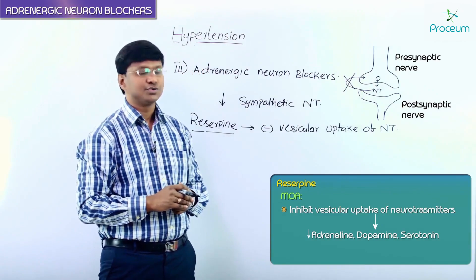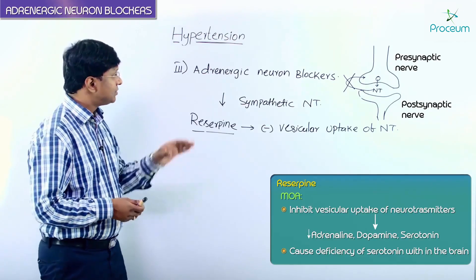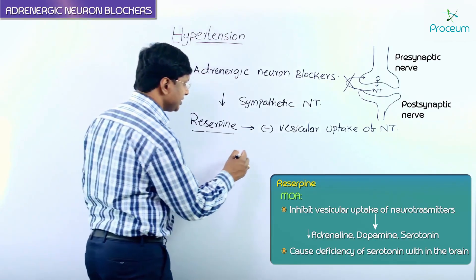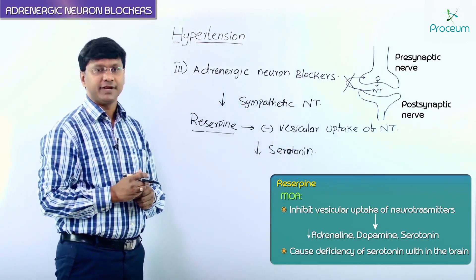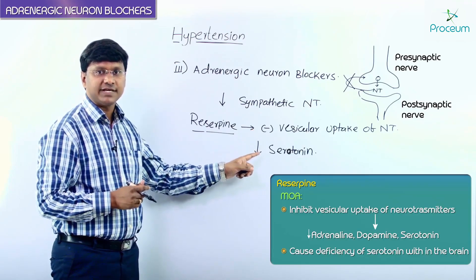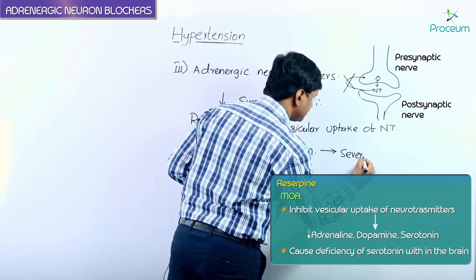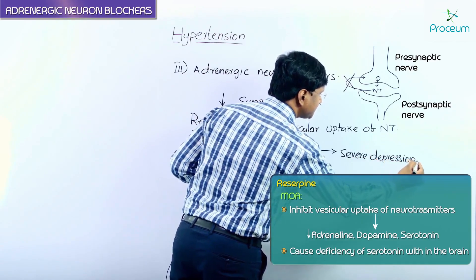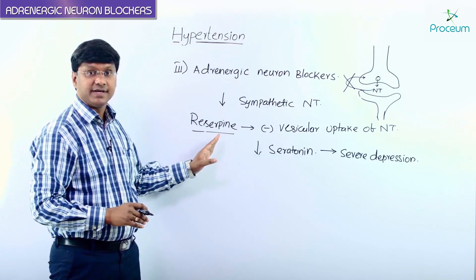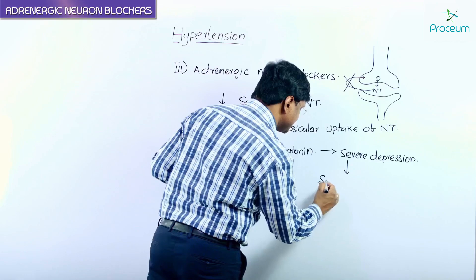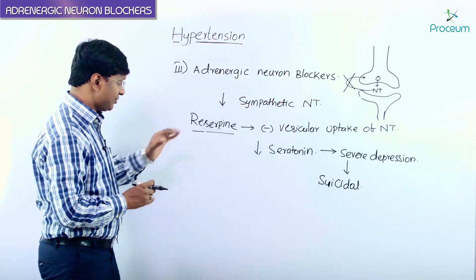An important point to remember is that reserpine causes a deficiency of serotonin within the brain, reducing serotonin levels. Once reserpine reduces serotonin in the brain, this will cause very severe depression, and sometimes this depression can even lead to suicidal tendencies.